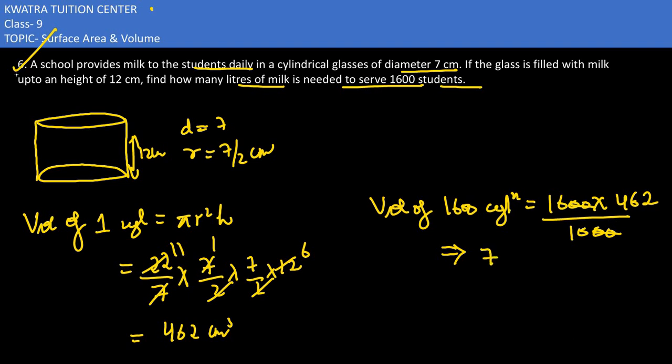462 times 16, so you would get 7392 divided by 10. One decimal place shift, so it would be 739.2 liters.